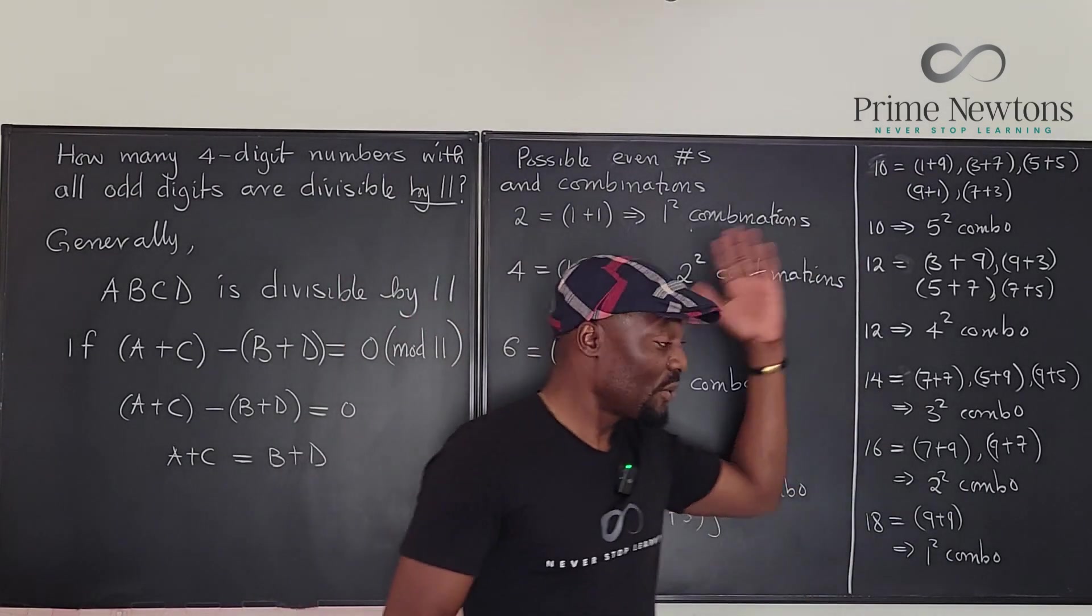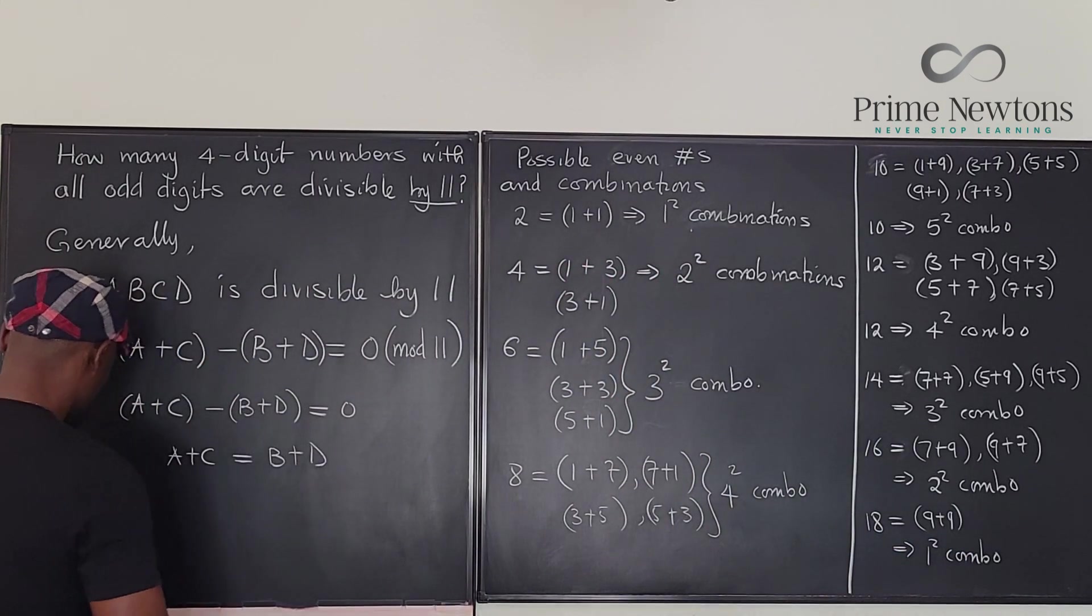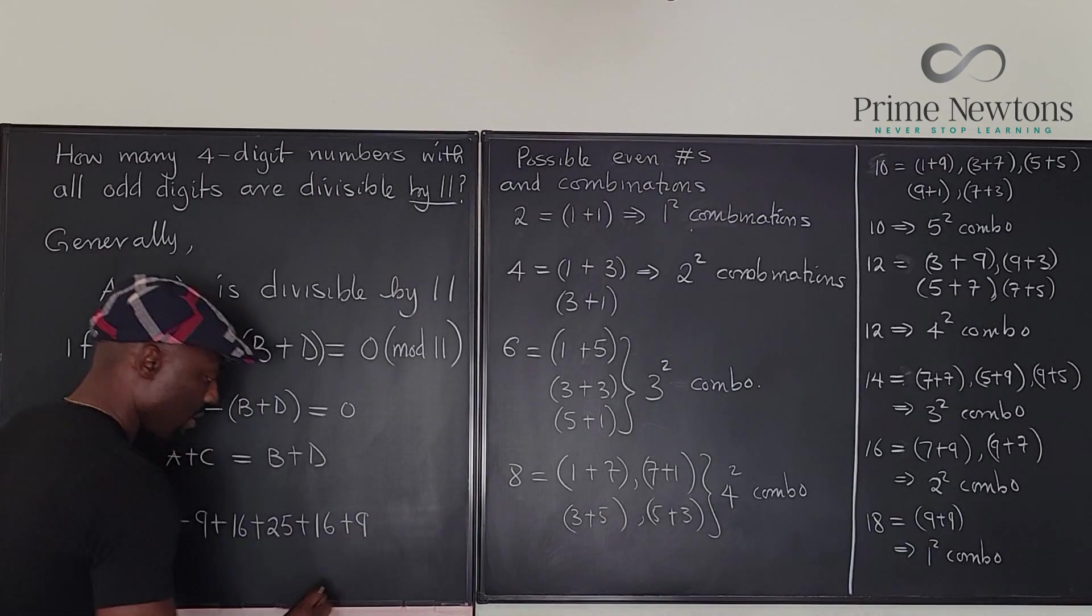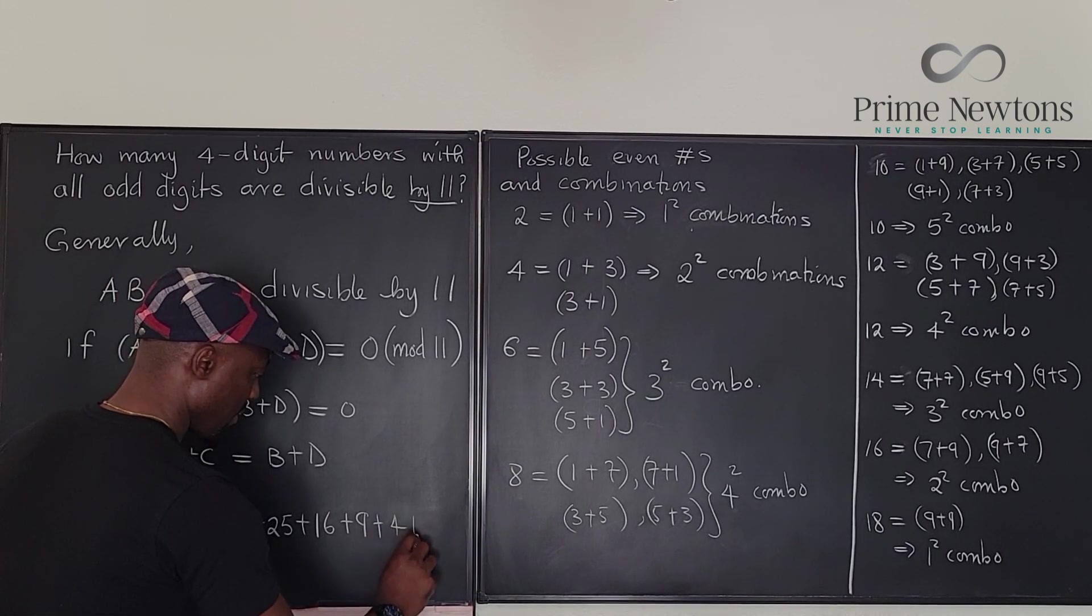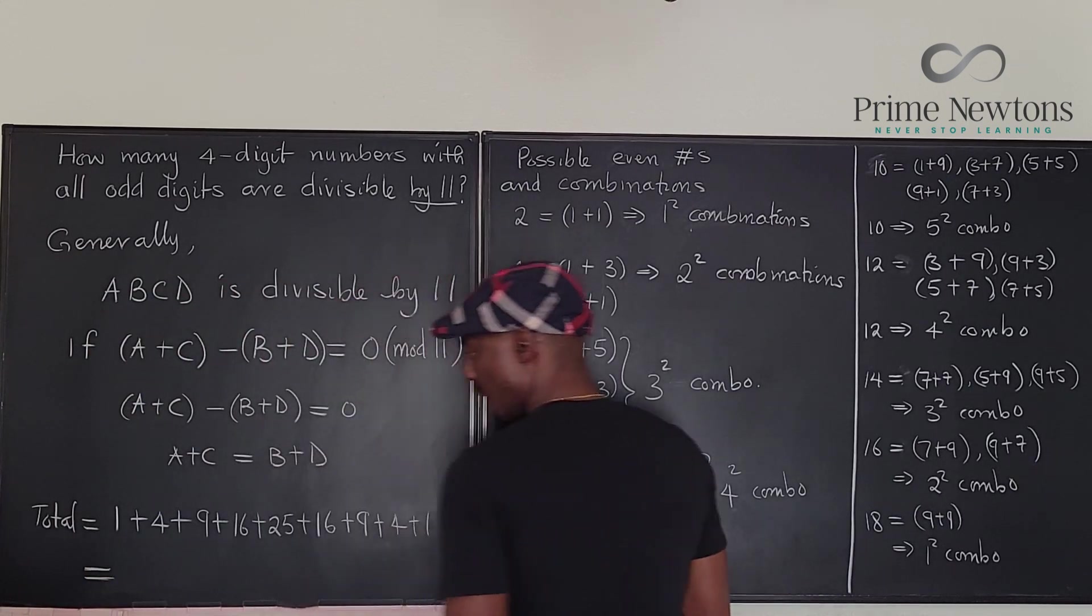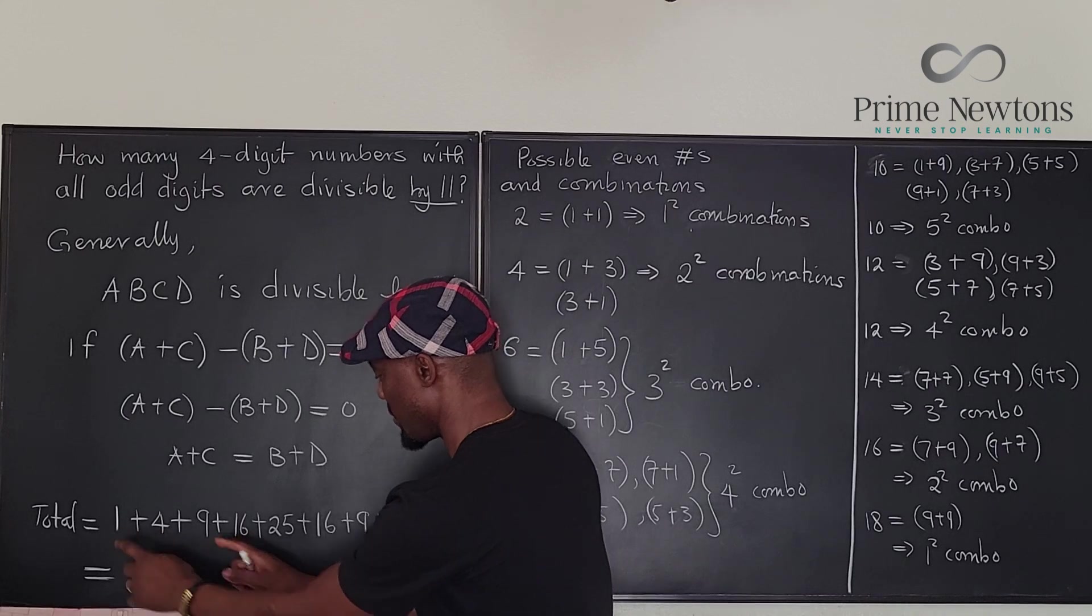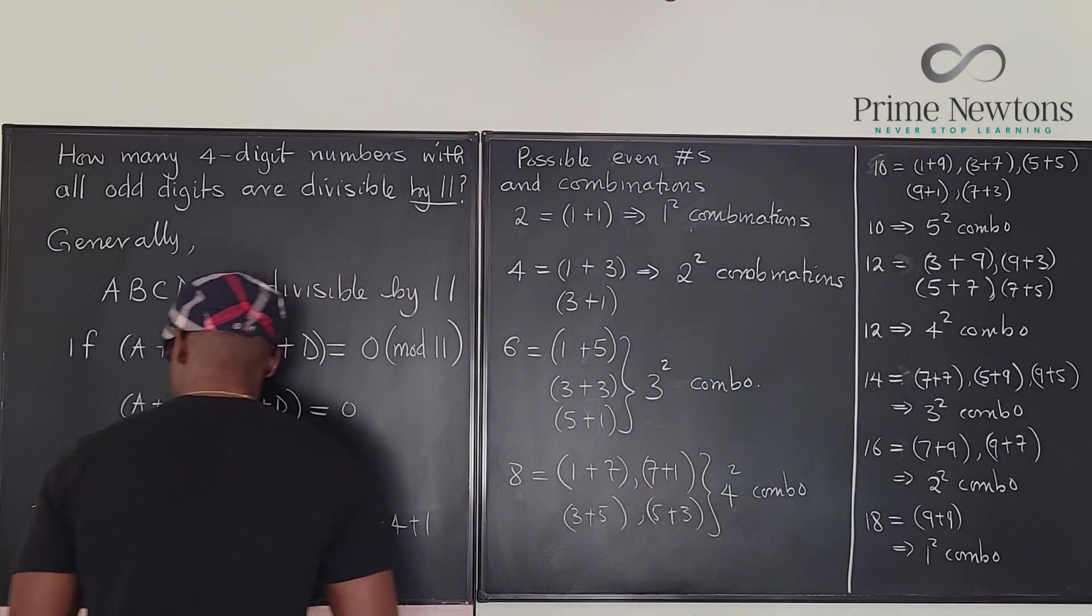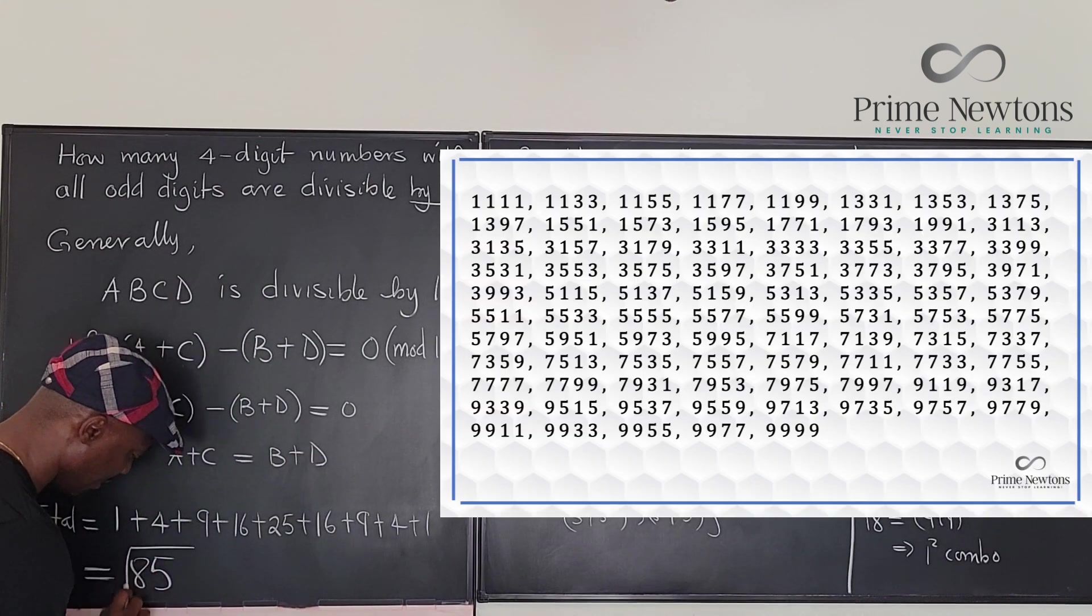So the total number of combinations that you're going to have for this to be true, total will be equal to 1+4+9+16+25+16+9+4+1. Let's do the adding. This is supposed to be 20, 30, this is 30, 60 plus 25 is 85. So that's where our answer comes from. 85 is the total.